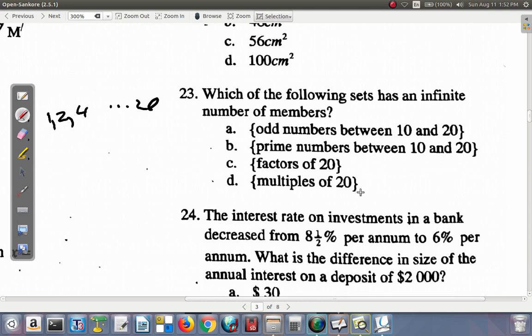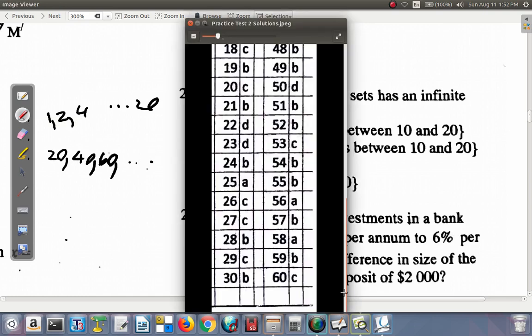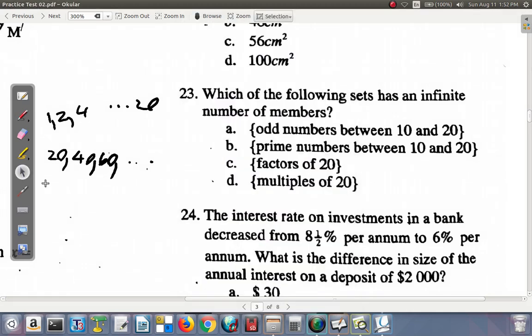But D, multiples of 20. Multiples of 20 are the numbers that 20 can go into without leaving a remainder. Multiples of 20 include 20 itself, you have 40, you have 60, on and on and on, without end. So, 23 is D. Question 23, the answer is D.